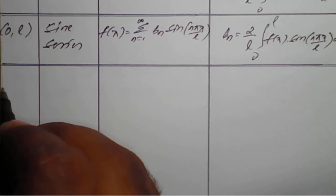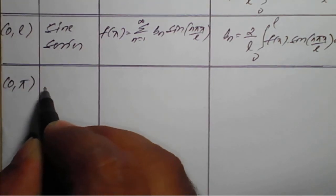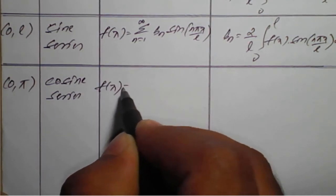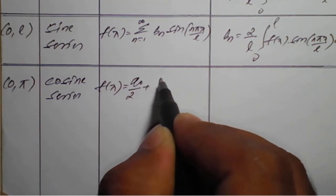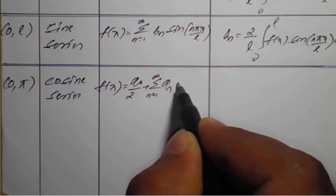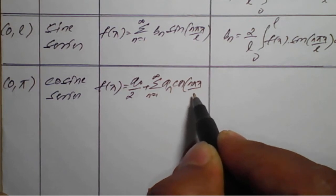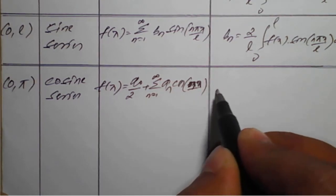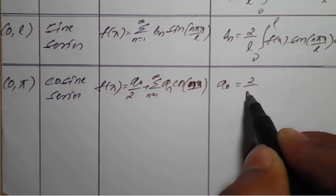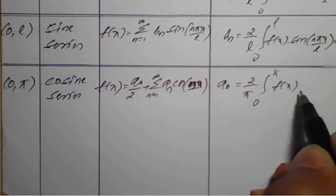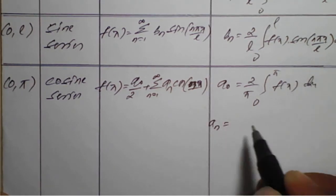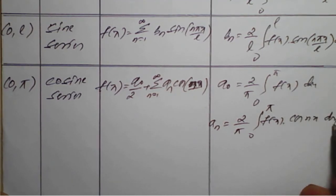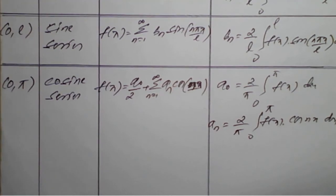Now for the interval 0 to pi, the cosine series is: f(x) = a₀/2 + summation n from 1 to infinity of aₙ cos(nx), where a₀ = (2/π) integral from 0 to pi of f(x) dx, and aₙ = (2/π) integral from 0 to pi of f(x) cos(nx) dx. This is the cosine series for 0 to pi.